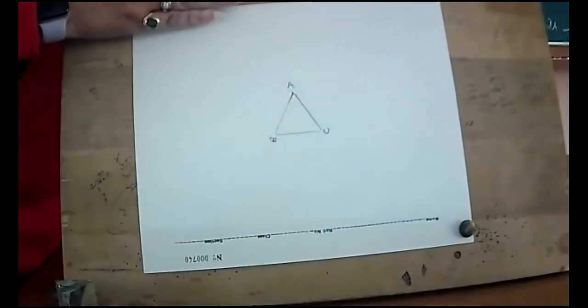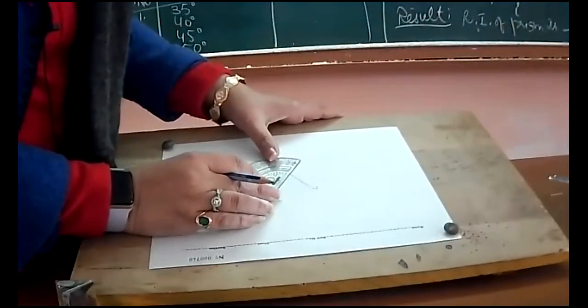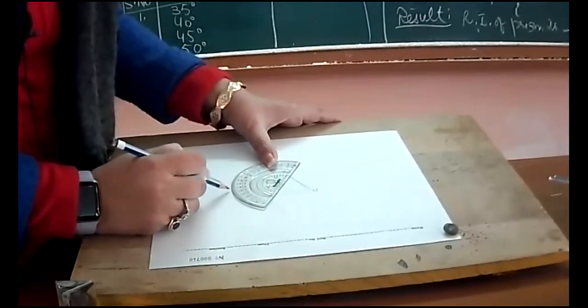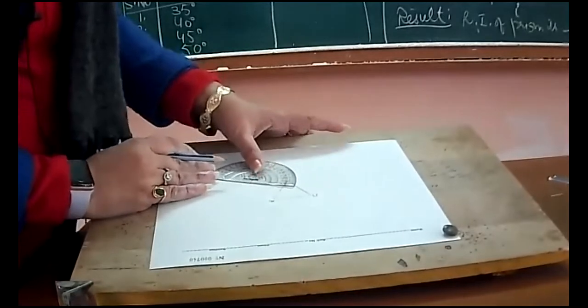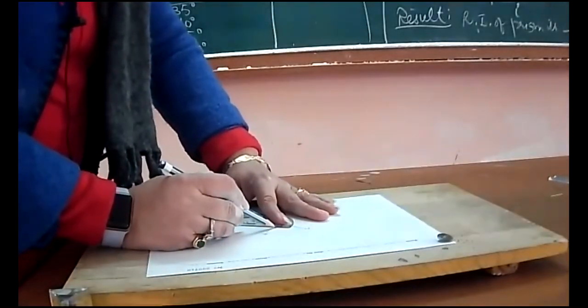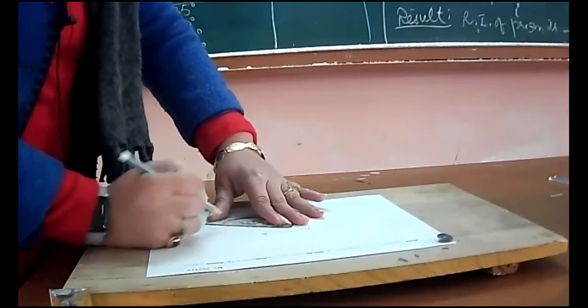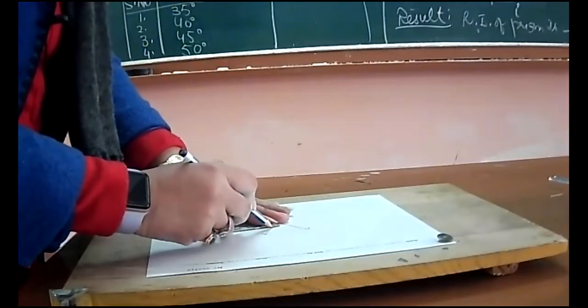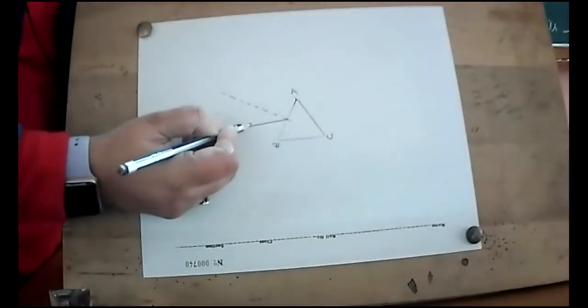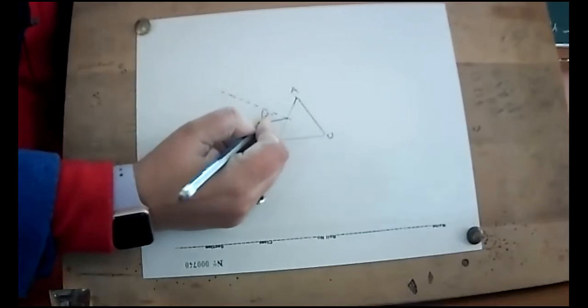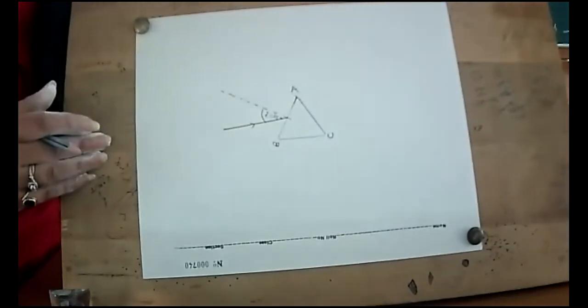Now I am going to keep my protractor here and mark 90-degree point and a point on 65. So I have drawn normal and incident ray. This is angle of incidence equal to 35 degrees. I gave a 55-degree point and 90-degree point here, so the angle in between is 35 degrees.